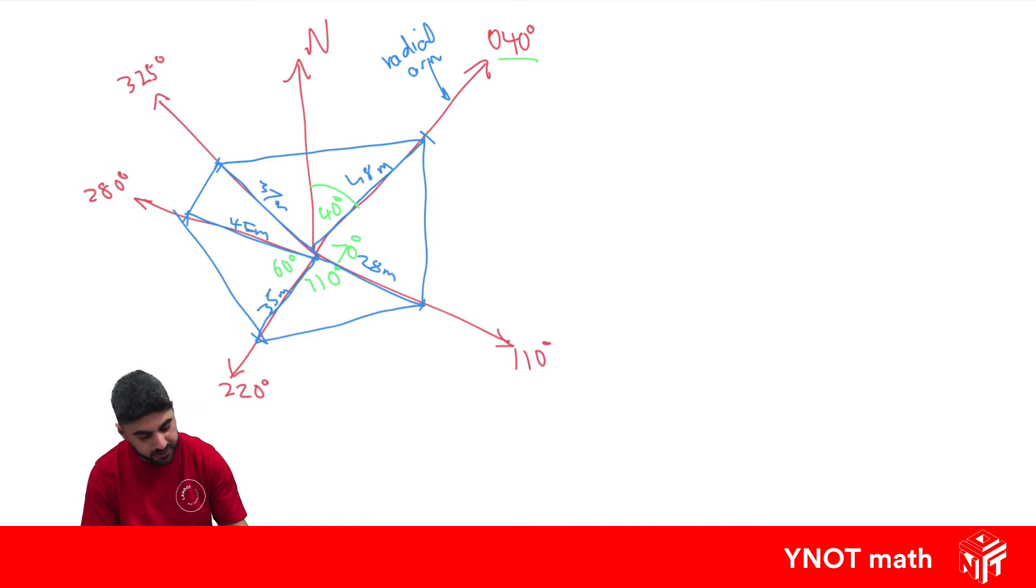Then we're going to do 280 minus 220 to give us 60. We're going to do 325 minus 280 to give us 45 degrees. And then the next one, you just got to subtract 360, because that's what completes the compass, from 325 to give us 35 degrees for that one.